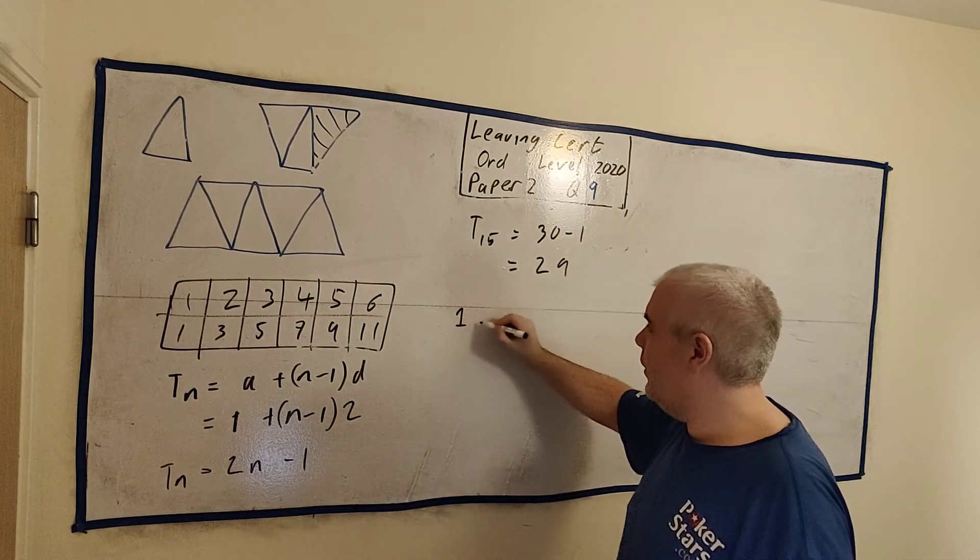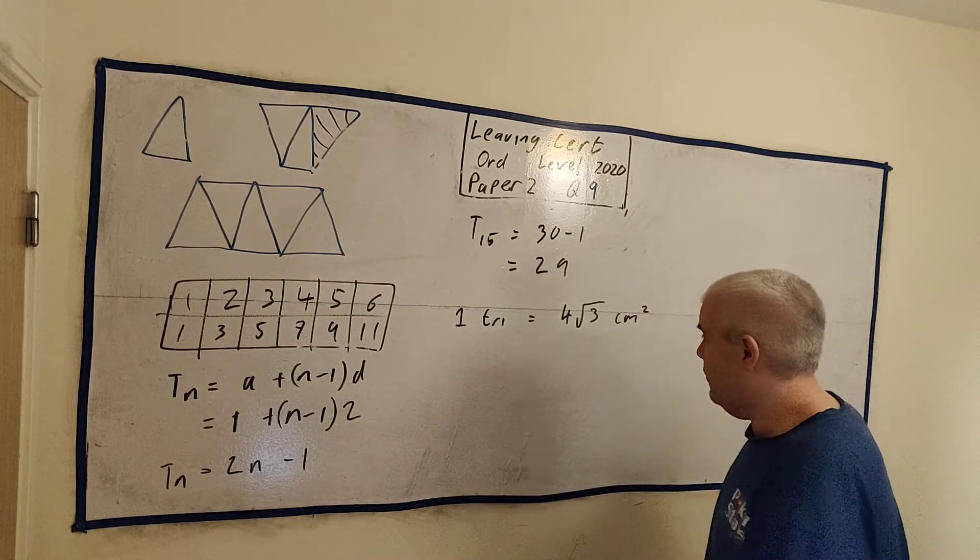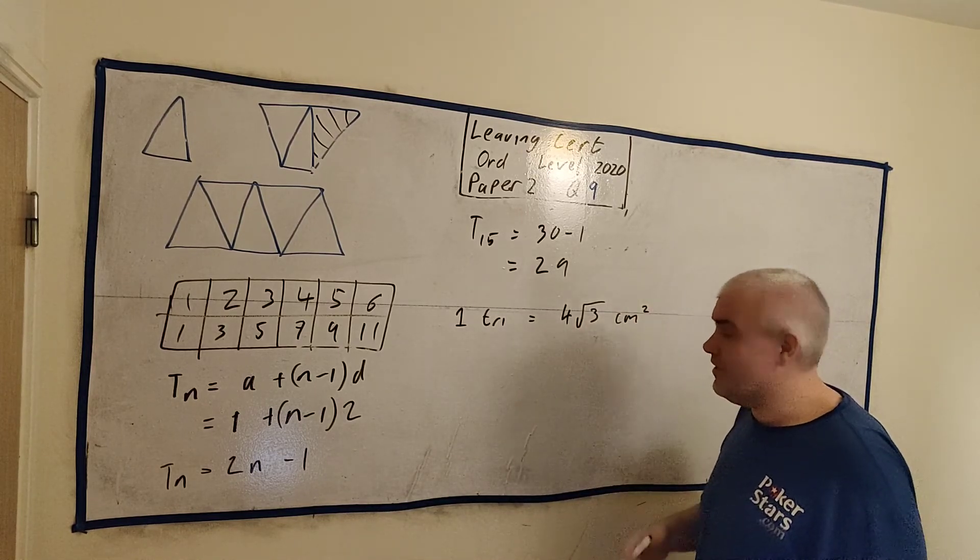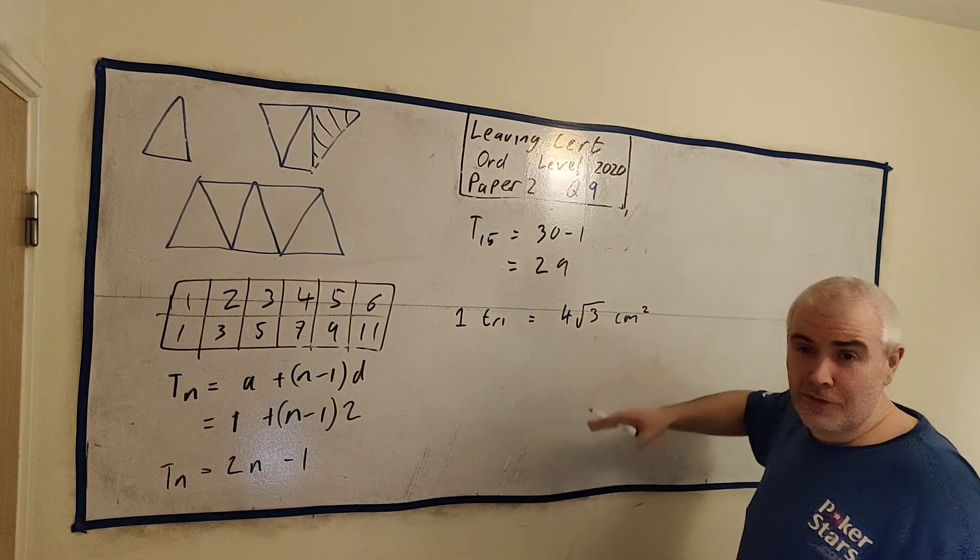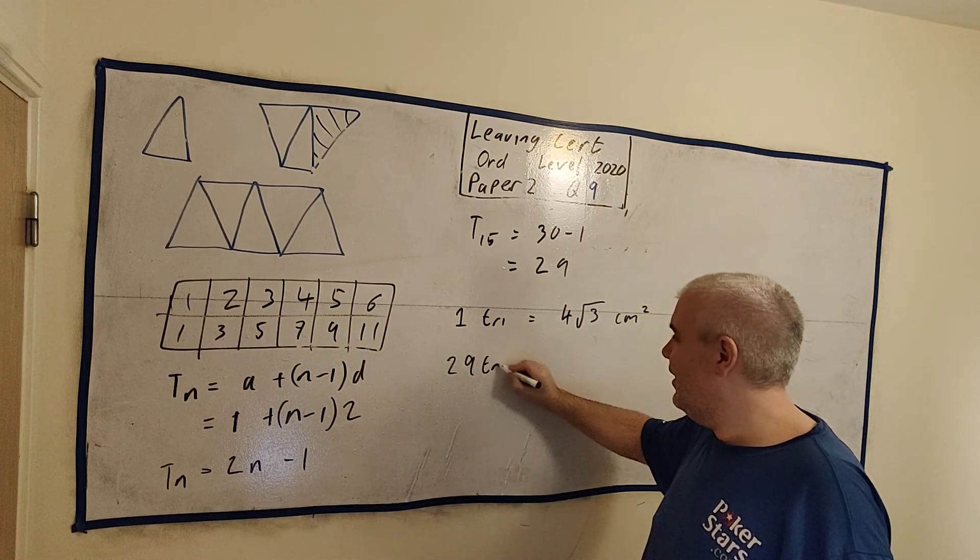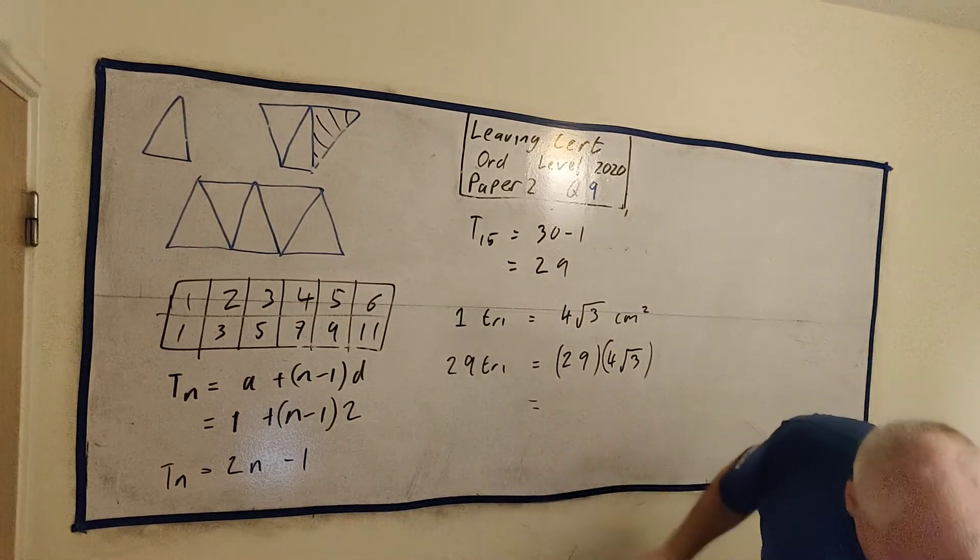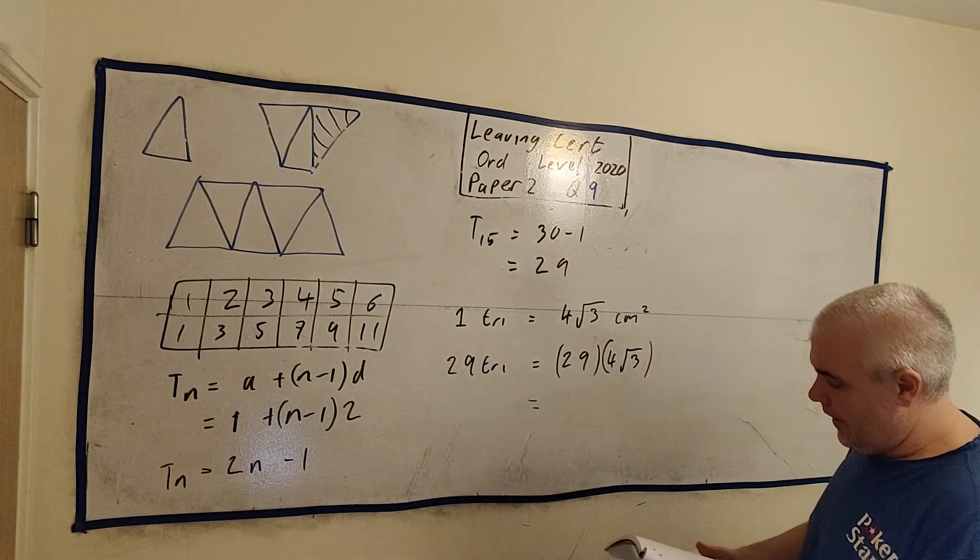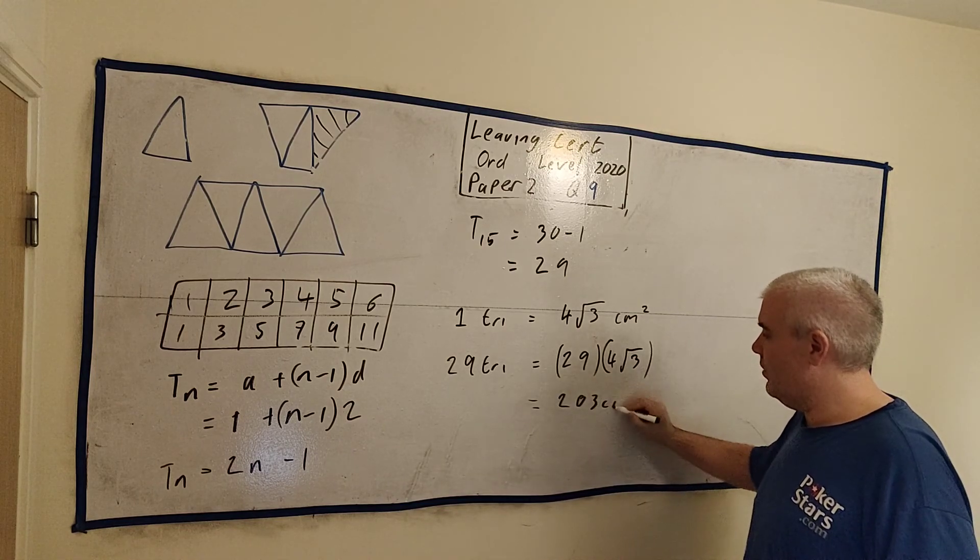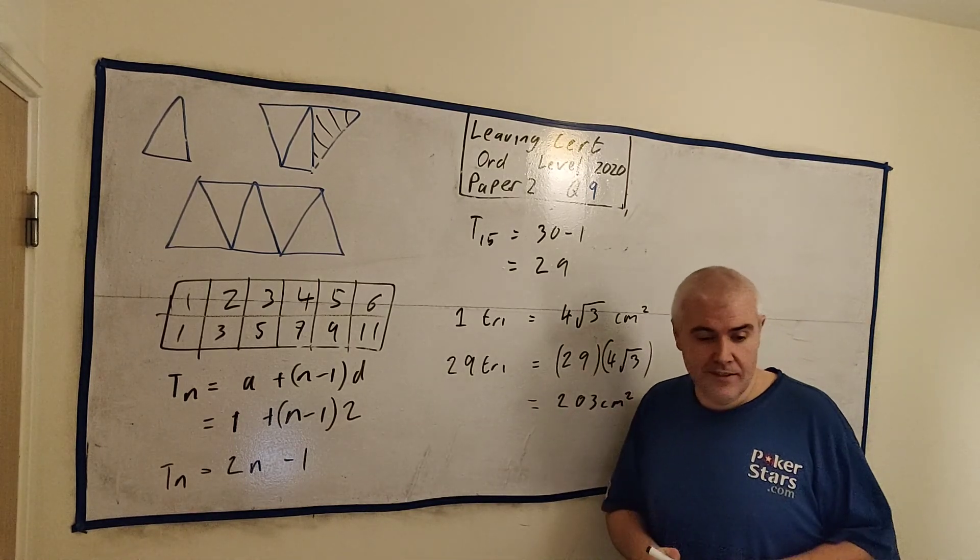Now let's use the information they told us. They told us one triangle equals 4 square root of 3 centimeters squared. Don't worry that this number is scary. They're trying to scare you a little there. Put in a calculator, you'll find out what it is. Don't do it yet. Leave it like this. One triangle is this. What's 29 triangles? 29 triangles must equal 29 multiplied by this: 4 times square root of 3. This you can put in a calculator. And we get 202.6. But they asked us to the nearest centimeters squared. So it's 203 centimeters squared. And that's it. That's the last answer to that whole paper.